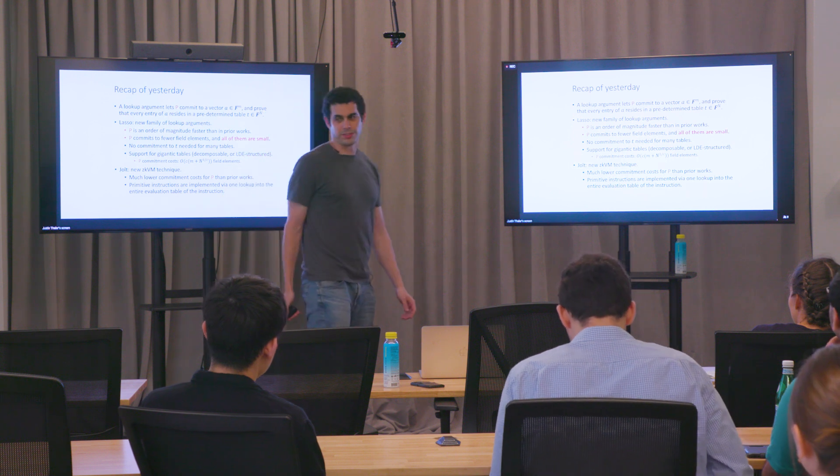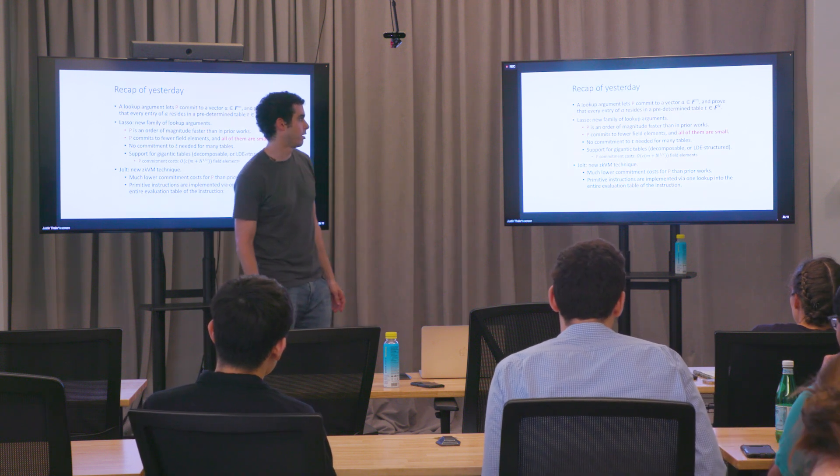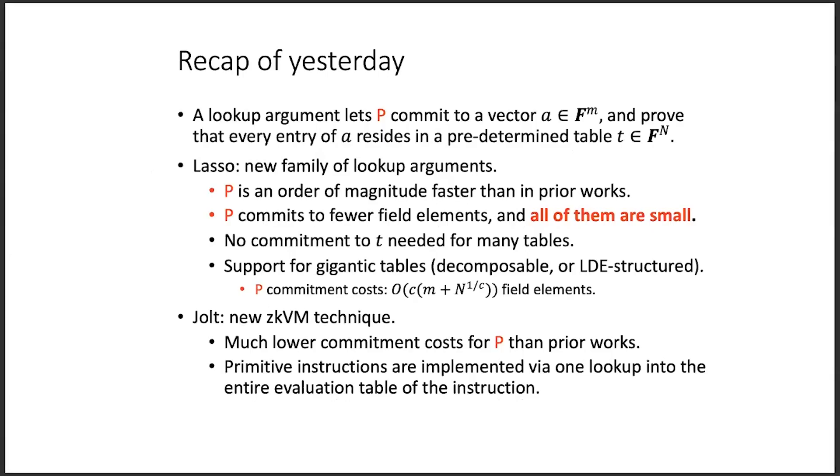Just like a one-slide recap of yesterday. A lookup argument lets a prover commit to a vector of values and then prove that all entries of that vector reside in some predetermined table.